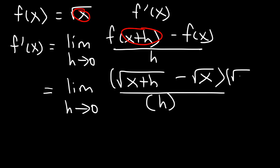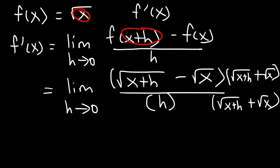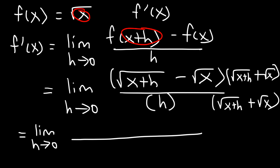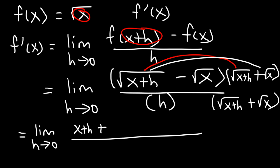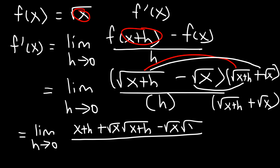So the conjugate is going to have the same expression — square root of x plus h and square root of x — but instead of a negative sign, we're going to have a positive sign. Now let's FOIL what we have on top. The square root of x plus h times itself: the square roots will cancel and you get x plus h. And then we have these two middle terms — plus square root x times square root x plus h, and negative square root x times square root x plus h. And finally the square root of x times the square root of x is simply x. Don't forget about the negative sign. And on the bottom, just rewrite it.